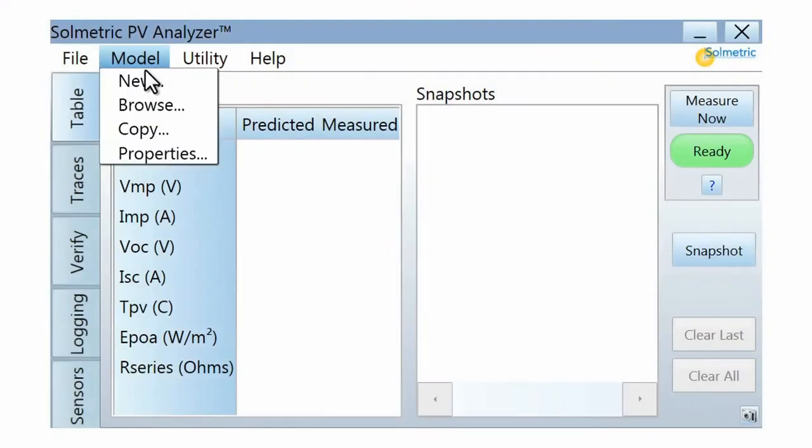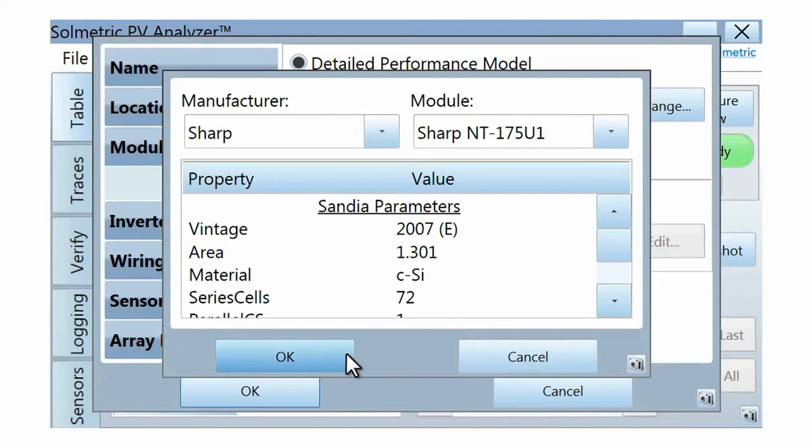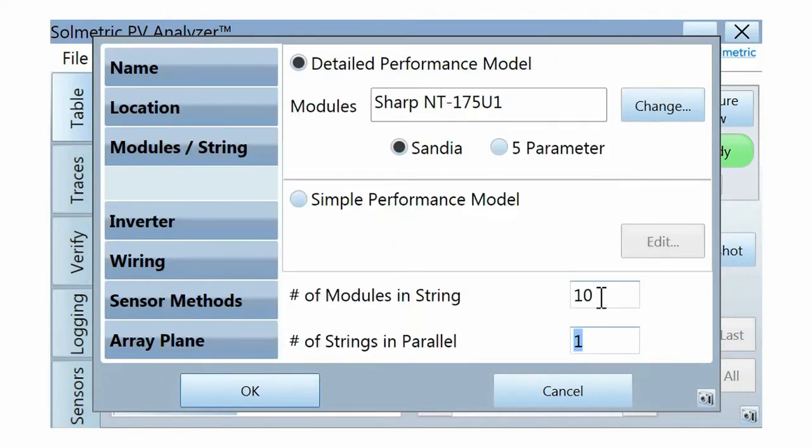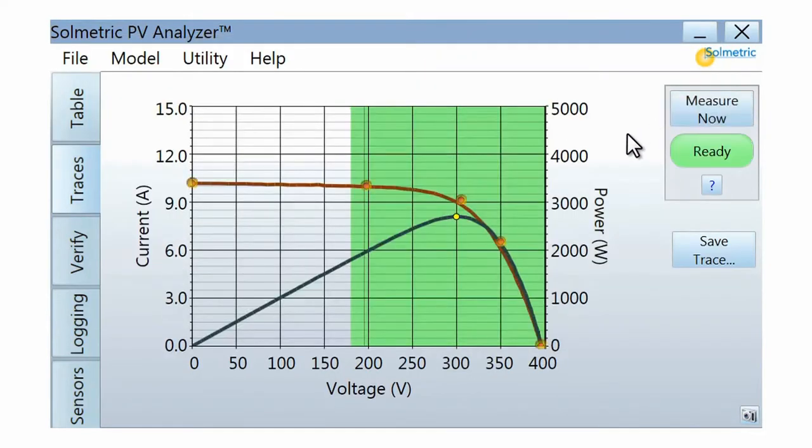The performance model is set up in preparation for measurements. It involves selecting the PV module model from an onboard database and entering the number of modules in series and in parallel. Using advanced performance models, the PV Analyzer software will generate accurate model points against which actual IV measurements can be compared.